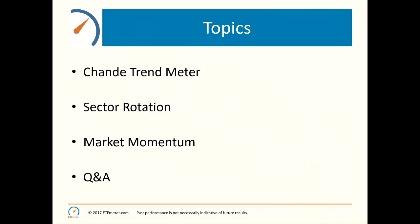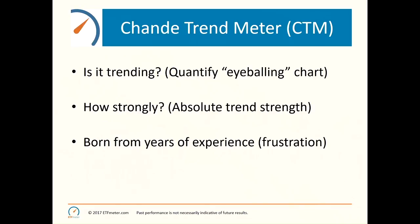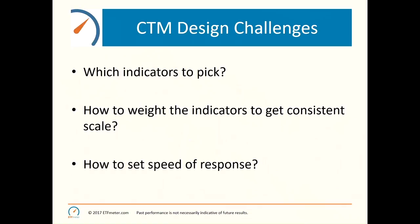The trend meter is really answering the question: is this market trending? If you were to eyeball a chart, this is like eyeballing a chart but converting it into a number. The question is how strongly is it trending. The main thing to remember is that this is absolute trend strength as opposed to relative strength, and it's been born from years of experience and frustration — this is a question that has a thousand different answers, and this is my attempt to quantify it.